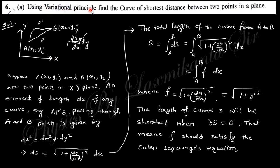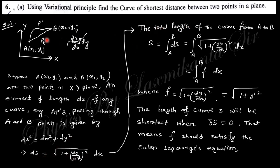The first question says: using the variational principle, find the curve of shortest distance between two points in a plane. Consider two points A and B — various paths can connect A to B. For any path, the distance element δs is nothing but √(dx² + dy²). The total length from A to B is the integral of ds from A to B, which gives the functional f = √(1 + y'²), where y' means dy/dx.